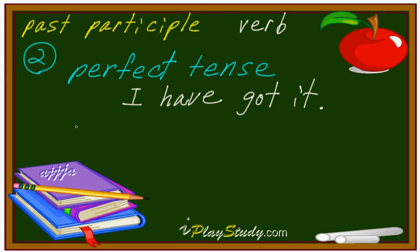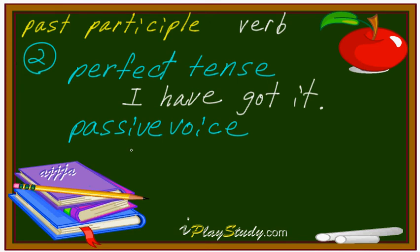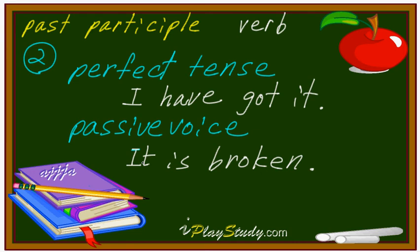The next use is passive voice. Passive voice means you just receive some action. Sometimes people say 'it broke' — but if something like a glass was broken by someone else, that's not right. You should say 'it is broken.' The glass itself cannot break something — somebody else broke it. That's why: it is broken. In that case, this is not 'have' — it's be verb plus PP.